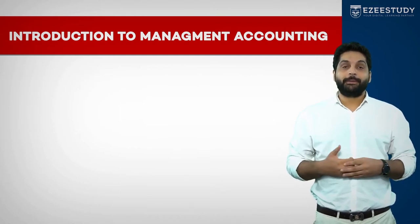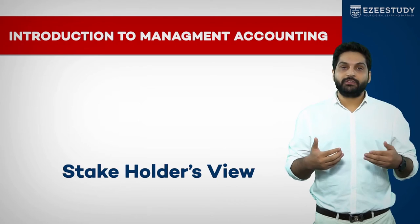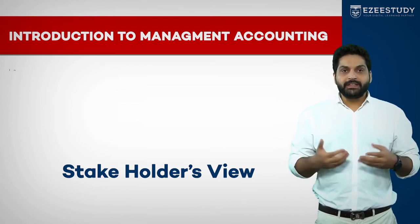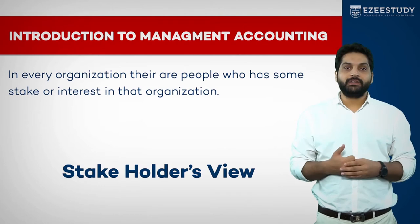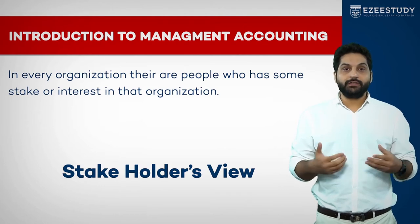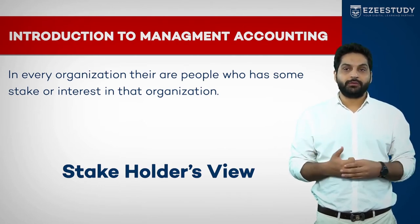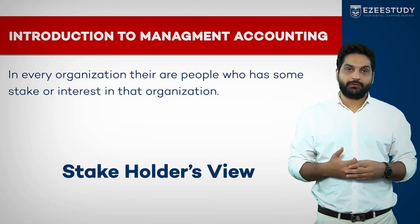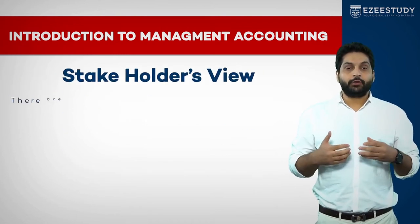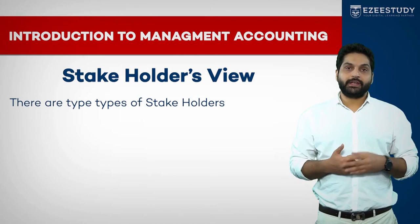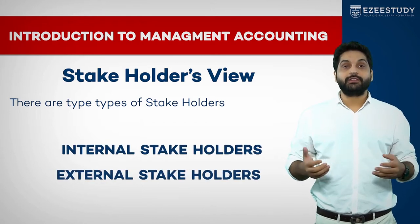We will try to understand this first through the stakeholder view. In any organization, there are people who are involved in and attached to the organization. These are two types of stakeholders: internal stakeholders and external stakeholders.